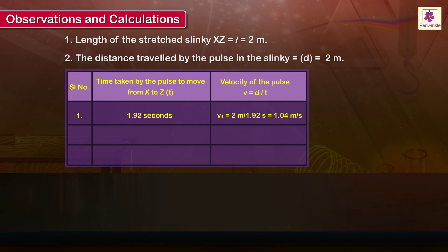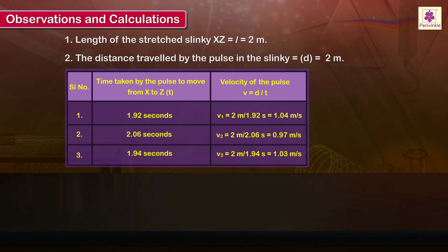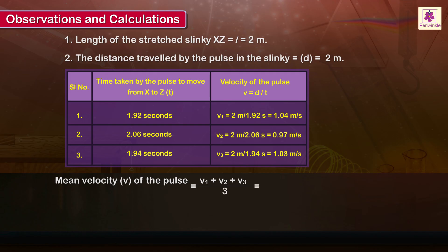V1 = 2 meters / 1.92 seconds = 1.04 meters per second. V2 = 2 meters / 2.06 seconds = 0.97 meters per second. V3 = 2 meters / 1.94 seconds = 1.03 meters per second. Mean velocity v = (V1 + V2 + V3) / 3 = (1.04 + 0.97 + 1.03) / 3 = 1.01 meters per second.